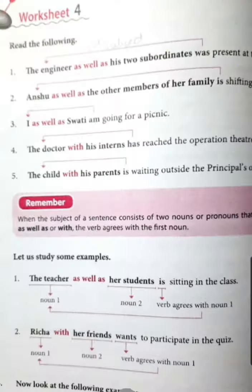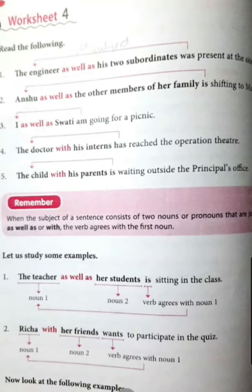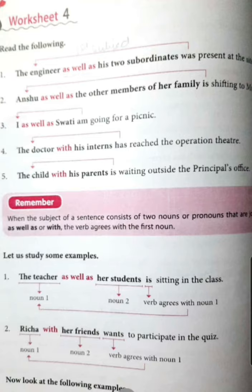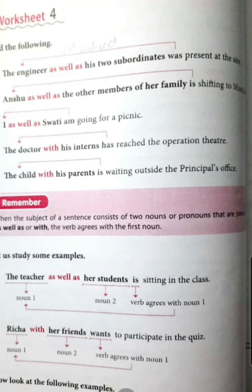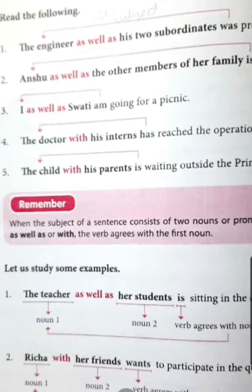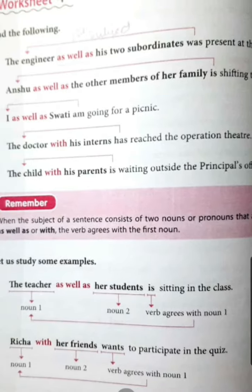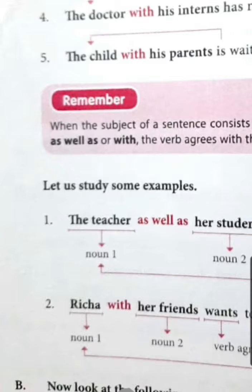In the same case, the next one: 'The child with his parents is waiting outside the principal's office.' Again it will agree with the first subject. Always remember that when the subject of a sentence consists of two nouns or pronouns joined by 'as well as' or 'with', the verb agrees with the first noun. More examples: 'The teacher as well as her students is sitting in the class.' 'Richa with his friends wants to participate in the quiz.' In both sentences, the first noun is singular, so the verb agrees with the first noun.